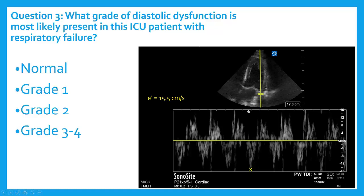Here's another question: what grade of diastolic dysfunction is most likely present in this ICU patient with respiratory failure? I've only measured one thing — a lateral E-prime velocity. I've got my sample box right over the myocardium at the mitral valve annulus in the lateral wall in a four-chamber view. So is this normal, grade 1, grade 2, grade 3, or grade 4? It's normal — I have an E-prime velocity that is well above 13. That is a vigorously relaxing left ventricle.